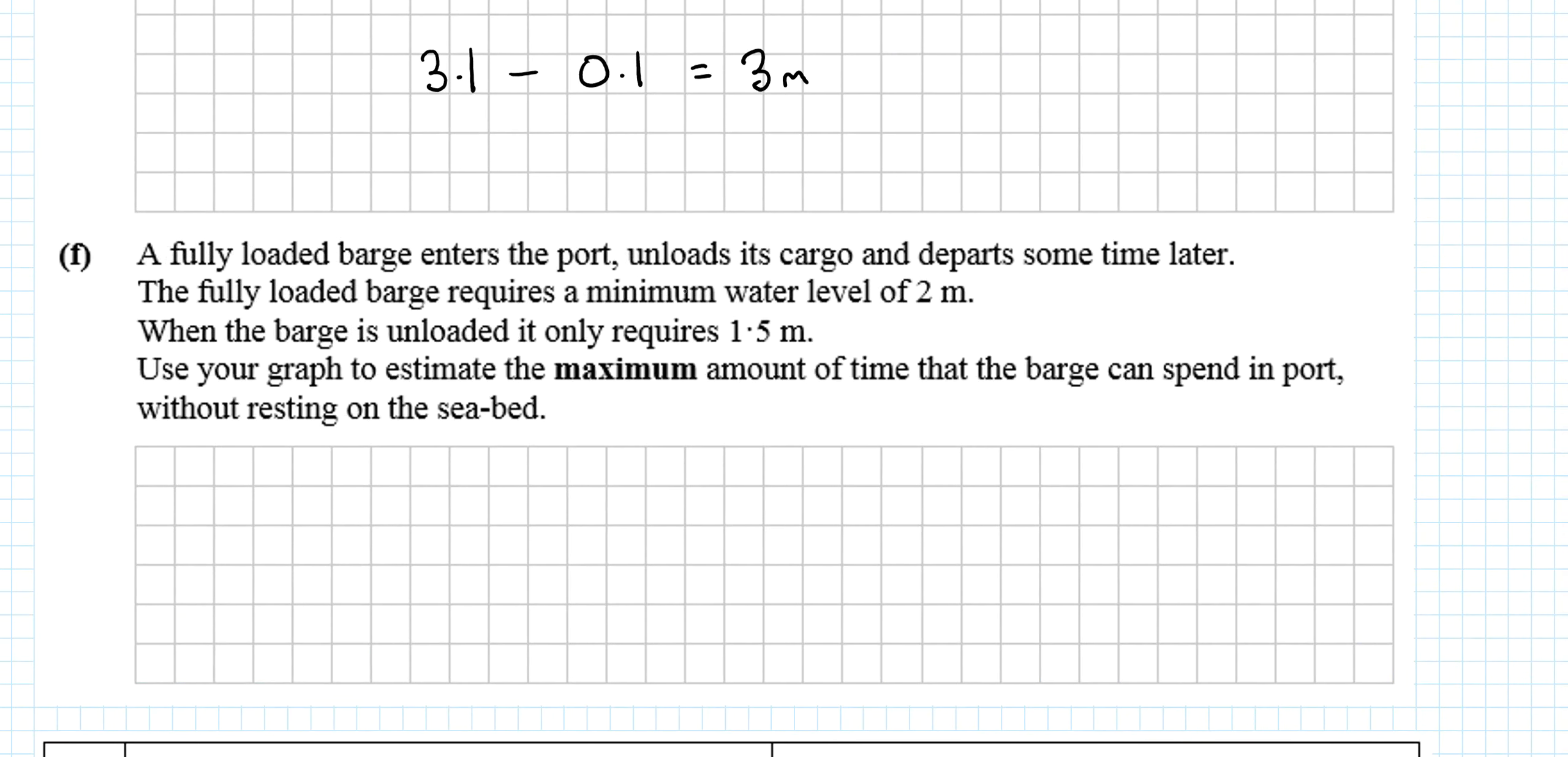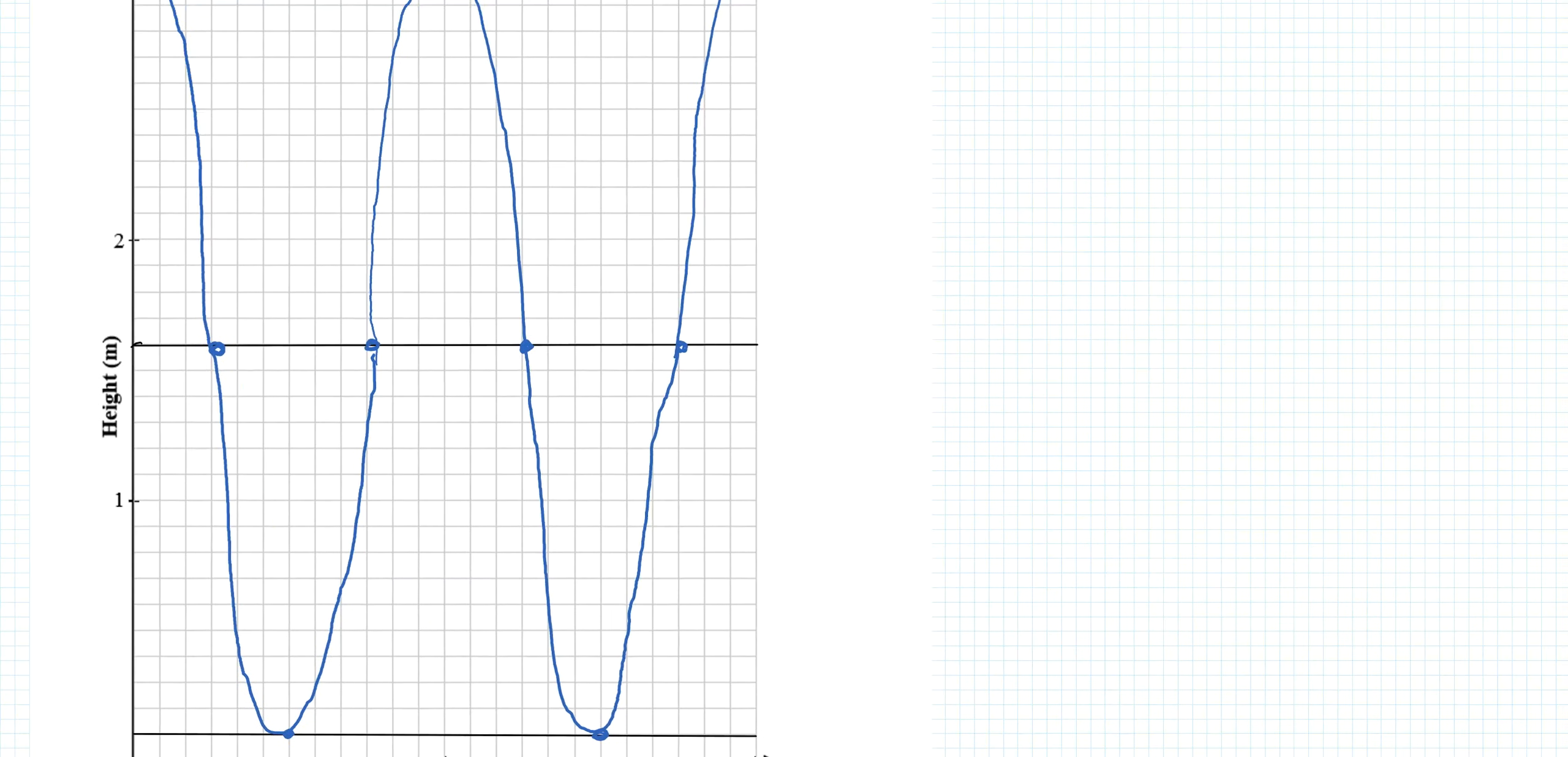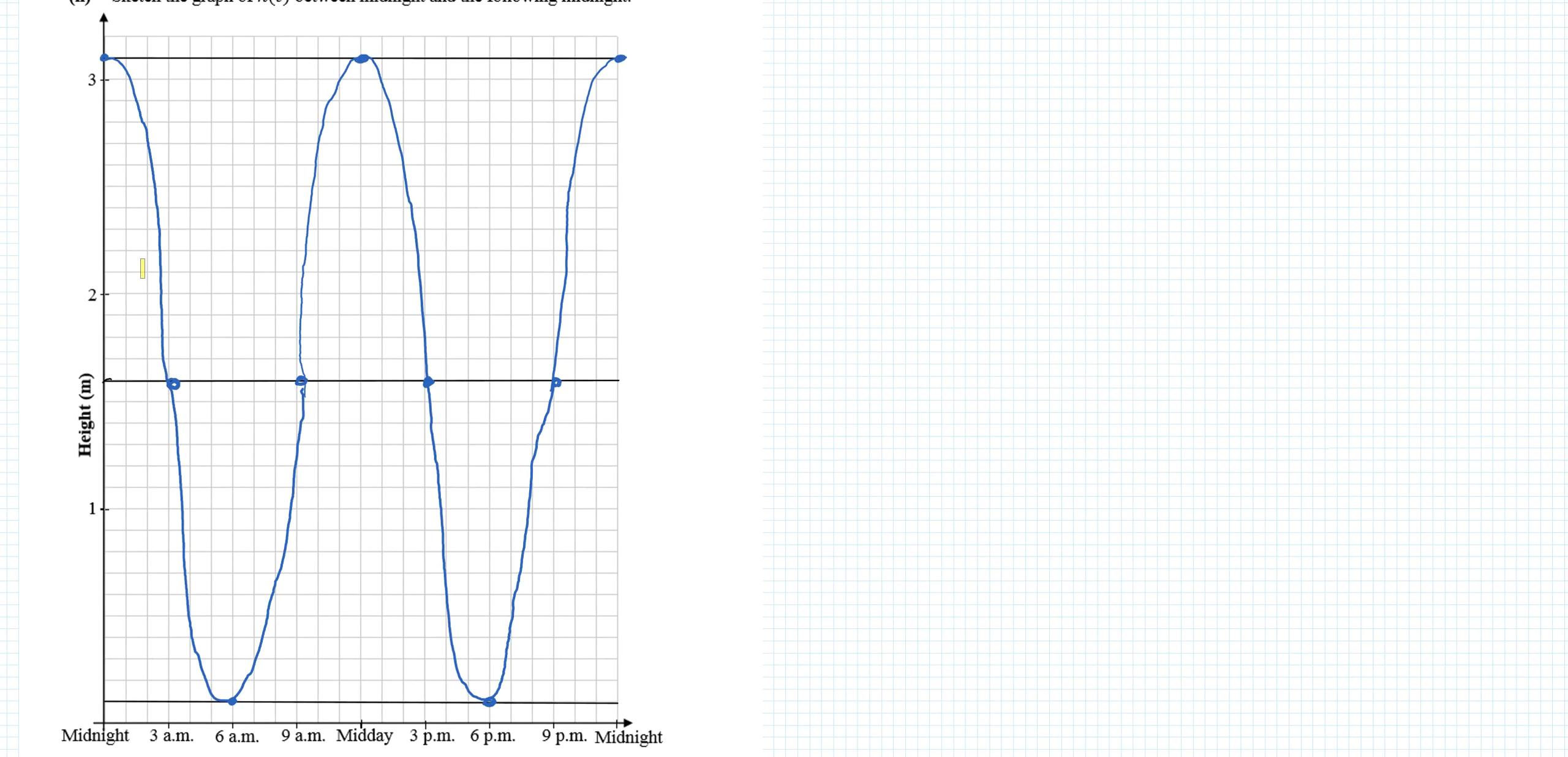A fully loaded barge enters the port, unloads its cargo, and departs sometime later. The fully loaded barge requires a minimum water level of 2 meters. When the barge is unloaded it only requires 1.5 meters. Use your graph to estimate the maximum amount of time that the barge can spend in the port without resting on the seabed. Well, we wouldn't want the barge to enter in any of this time. Once it gets past 3-ish, it would start resting on the bottom. So that's not good enough.